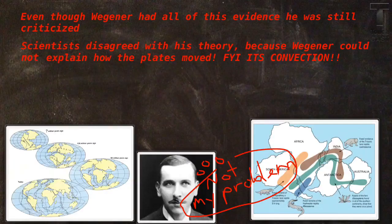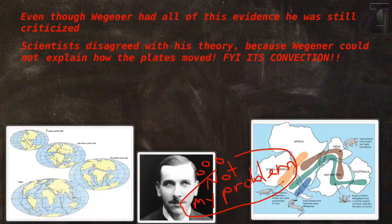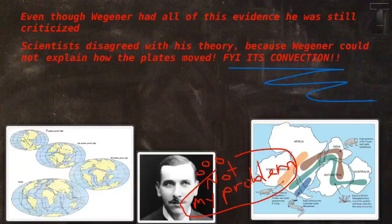Even though Wegener has all of this evidence, he's still highly criticized — partly because they consider him a newcomer to geophysics since that wasn't his original field, but more because his theory, though wonderful, could not explain how the plates moved. He could not explain how it went from Pangaea to what we see now. But spoiler alert: it's all because of convection, which you'll get to a little bit later this week or possibly next week.